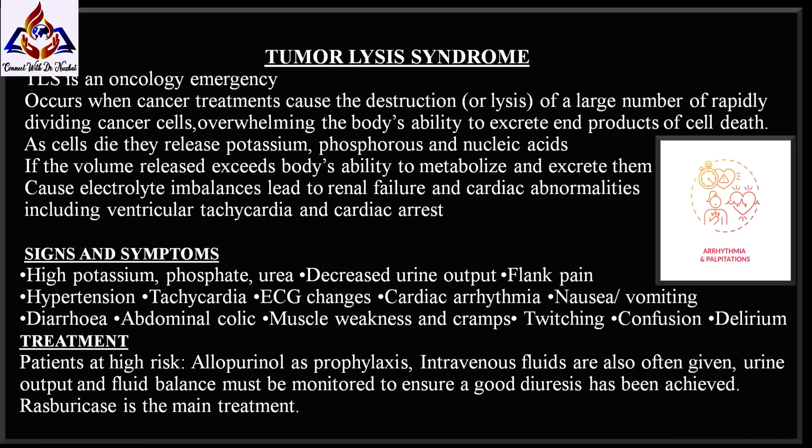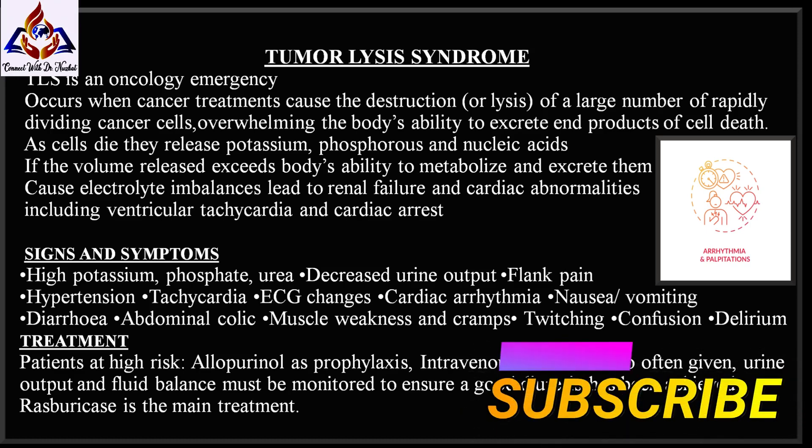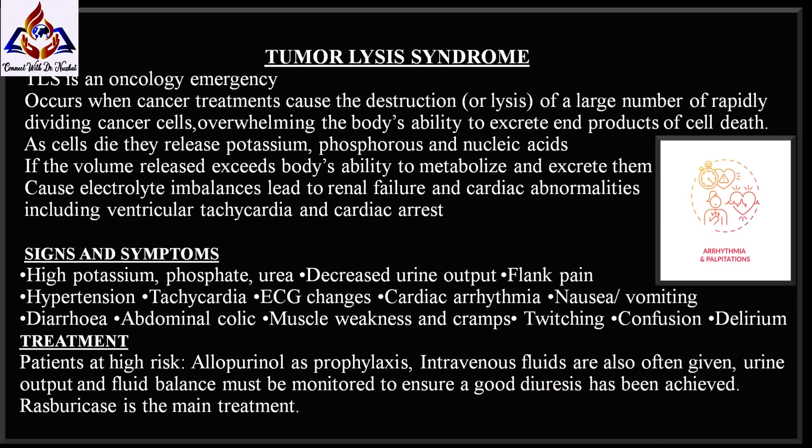These electrolyte imbalances place the patient at risk of renal failure and cardiac abnormalities, including ventricular tachycardia and cardiac arrest. Signs and symptoms of tumor lysis syndrome include hypertension, high phosphorus, high urea, decreased urine output, flank pain, tachycardia, ECG changes, cardiac arrhythmia, nausea and vomiting, diarrhea, muscle weakness, muscle cramps, twitching, confusion, and delirium.